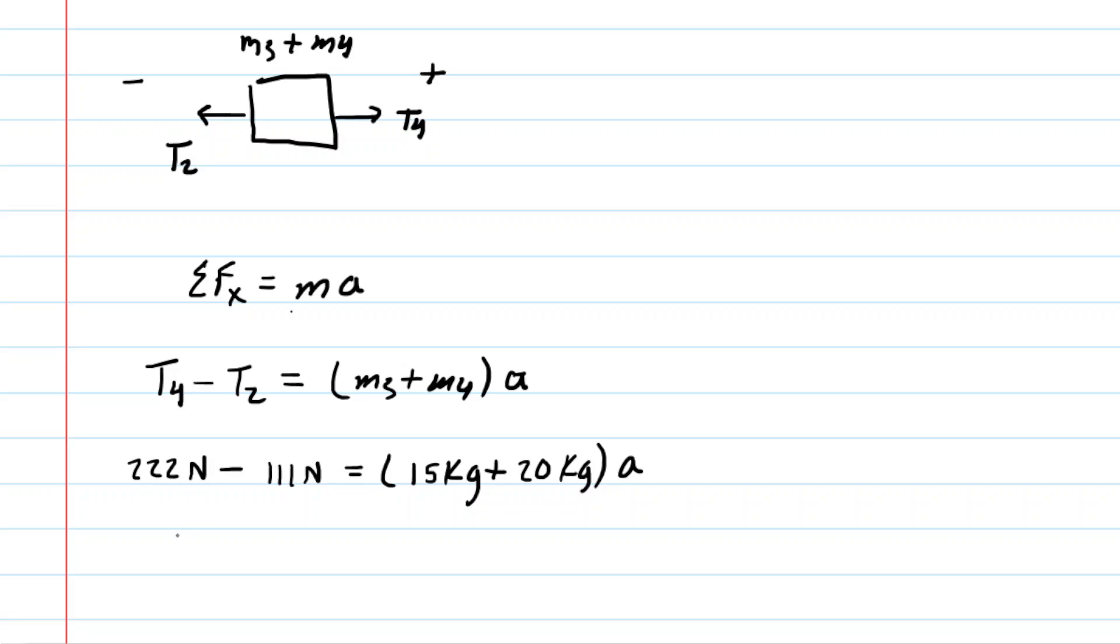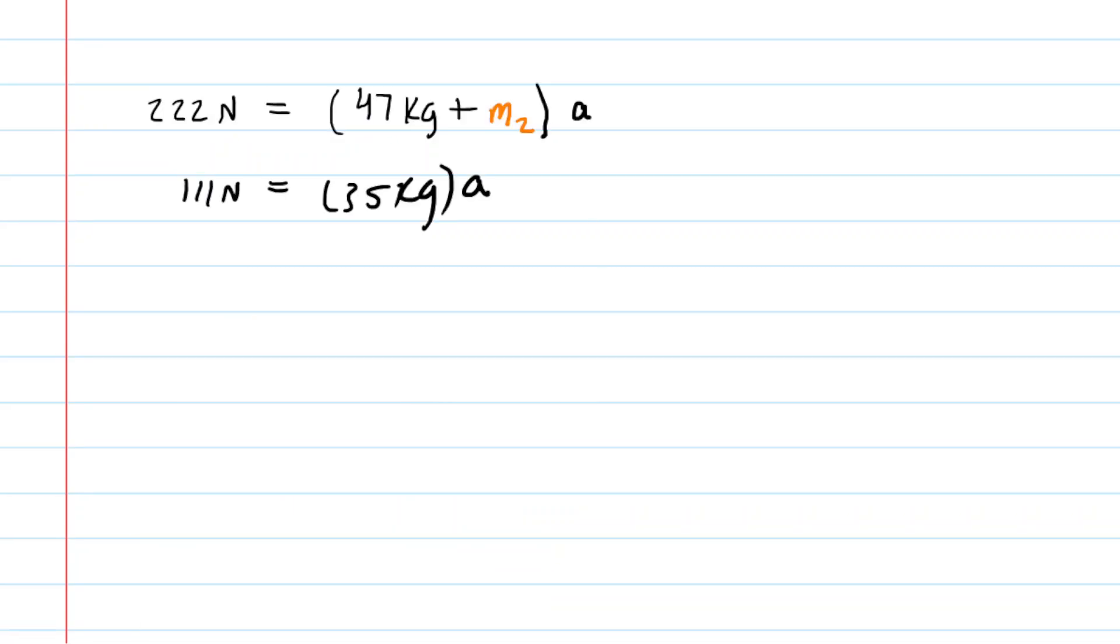There we go. Well, we can simplify the left-hand side by subtracting those two forces. We get 111 Newtons is equal to, and then we can add the masses together. We get 35 kilograms times the acceleration. So let's take this equation and kind of write it down in close proximity to the other equation we developed earlier.